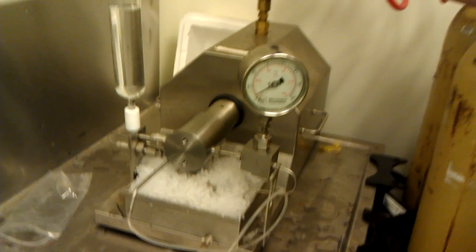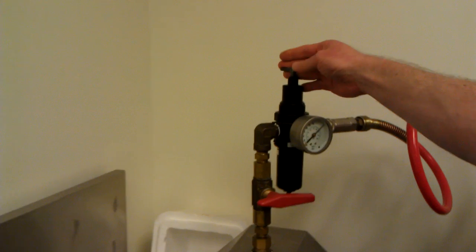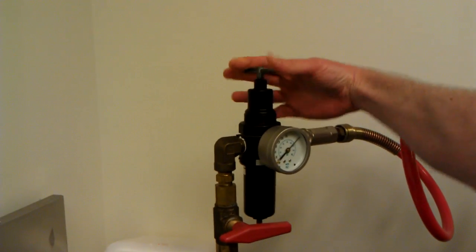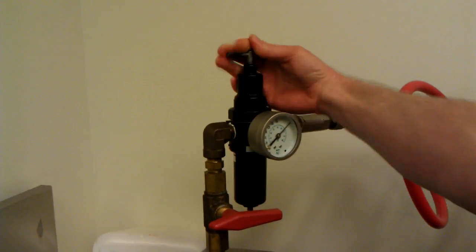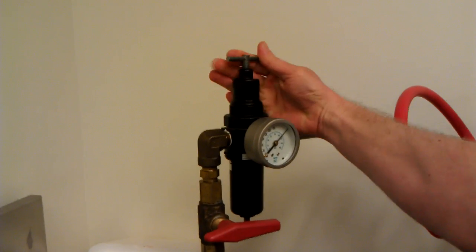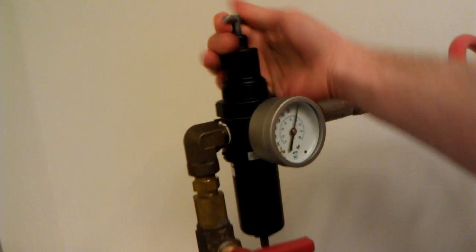You will adjust the pressure here using this lever. This one is set at about 30,000 PSI right now. Turning it counterclockwise you can lower this pressure, like I'm doing right now.